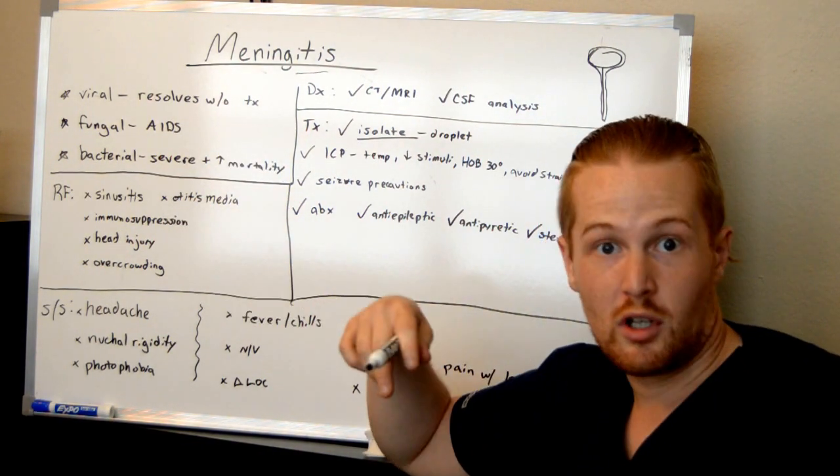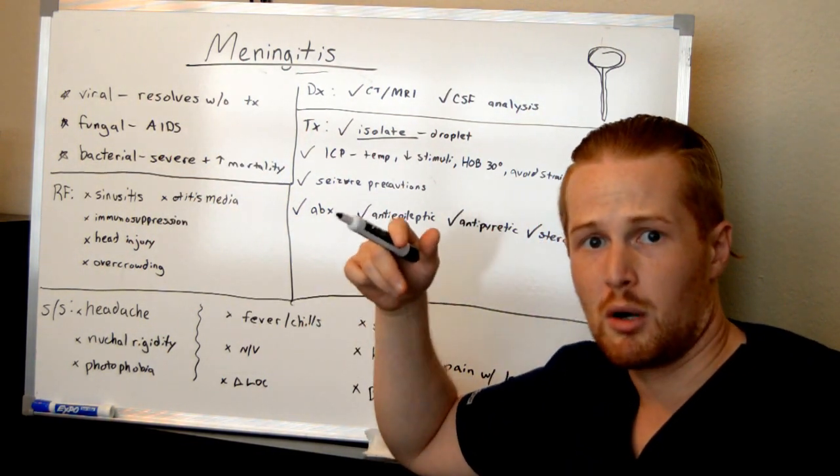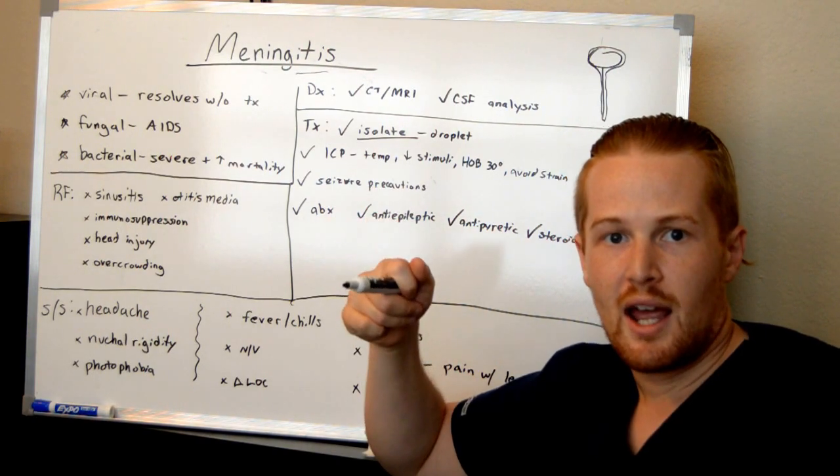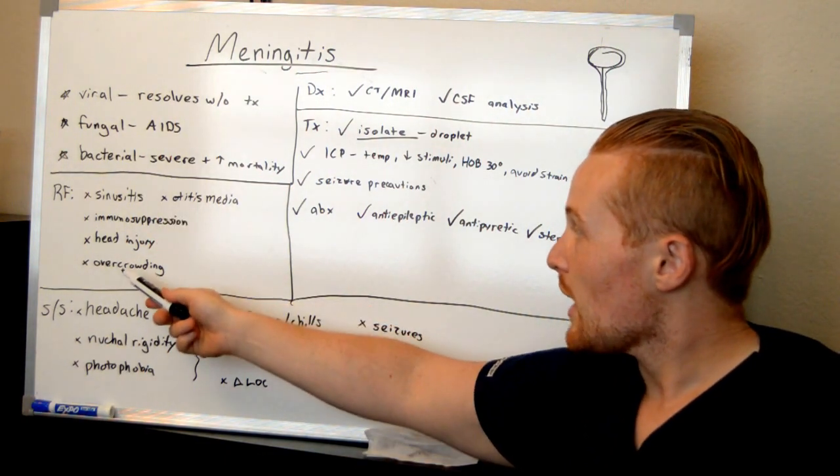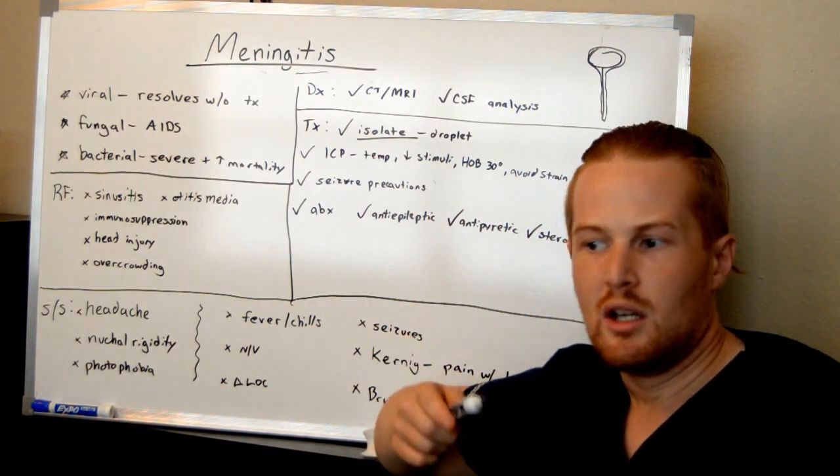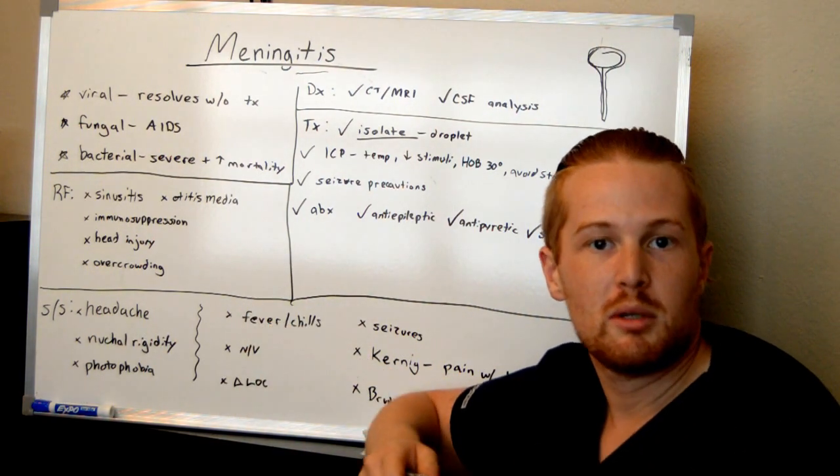If you went to college, and most of you watching this video are probably in nursing school right now, you had to have a vaccine for bacterial meningitis. And that's because one of the risk factors is overcrowding and being in dorms and in classrooms with lots and lots of people.